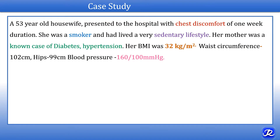Let's study this clinical case scenario. A 53-year-old housewife presented to the hospital with chest discomfort of one week duration. She was a smoker and had lived a very sedentary lifestyle. Her mother was a known case of diabetes and hypertension. Her BMI was 32 kg per meter square, waist circumference 102 cm, hips 99 cm, blood pressure 160 by 100 mmHg. The patient is obese and has hypertension, with a family history of diabetes and hypertension.